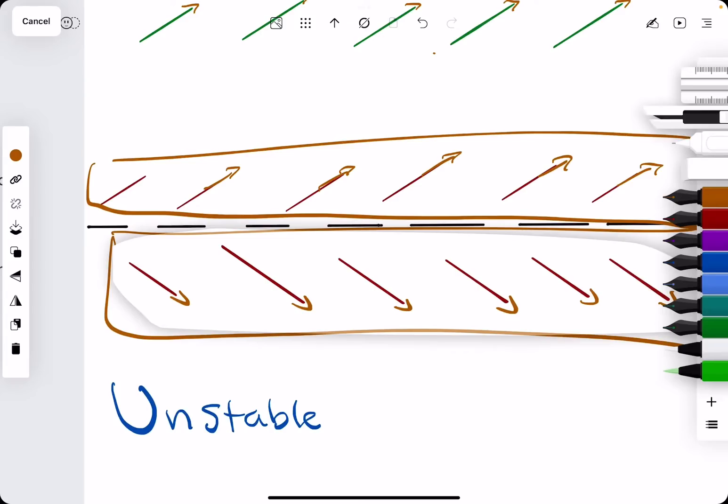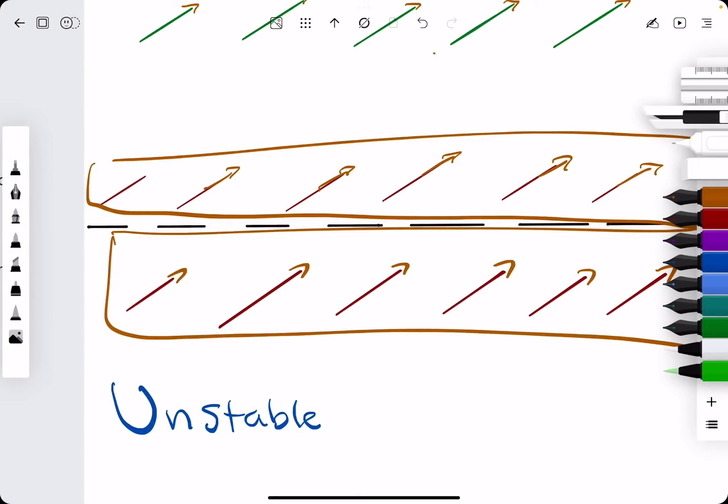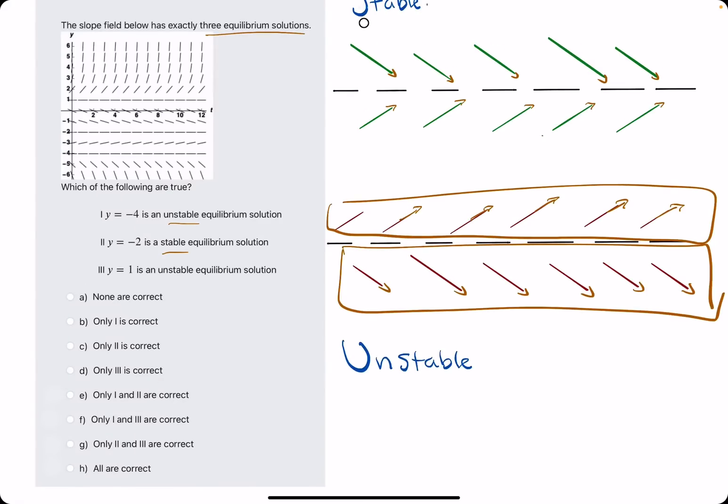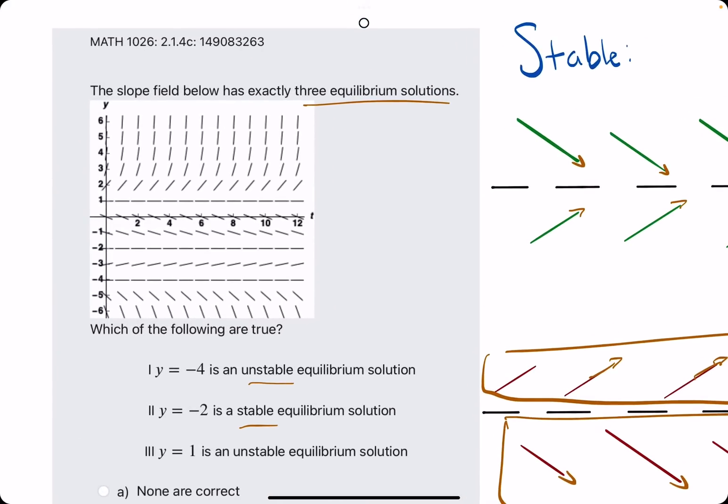But let's say instead, the bottom lines were approaching the line, were approaching the equilibrium solution, but the top ones were not. This would still be unstable. So, just some insight on that. Let's go ahead and talk through it.